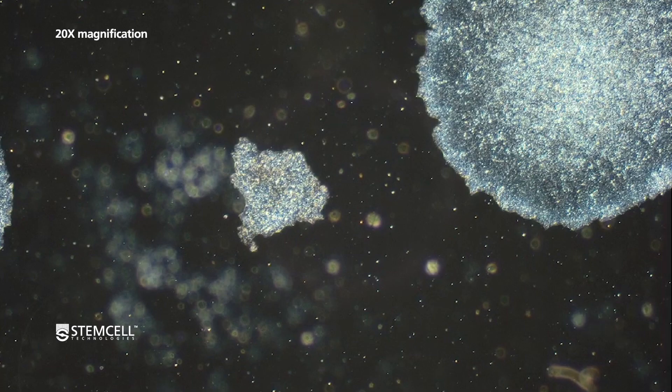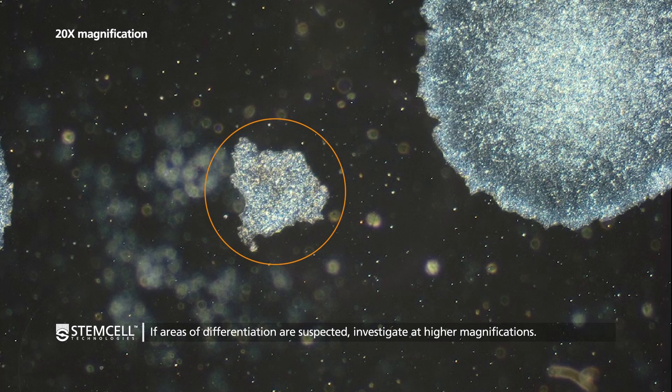At low magnification, if there are suspected areas of differentiation in that there is a loss of border integrity, cellular packing appears more loose and disorganized, or if there are visible holes or areas of non-uniformity within a colony, investigate by moving to a higher magnification.